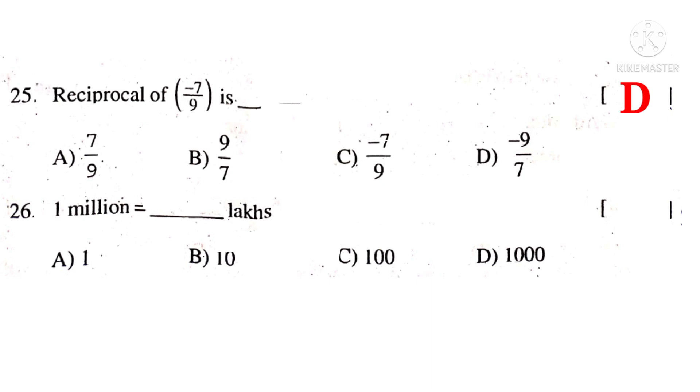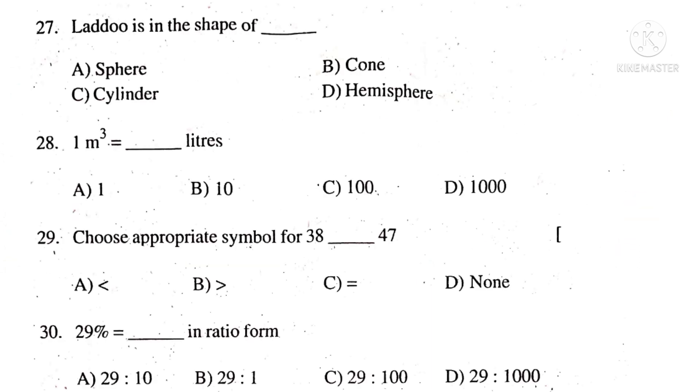26. One million is dash lakhs. 10 lakhs. So the correct choice is B. 27th question: Ladoo is in the shape of sphere. So the correct choice is A.